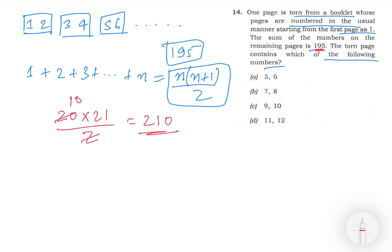This is a possible value. Now let's see, consider n equals 19. 19 into n value, that is 19 times 20 divided by 2.